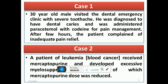Case number two talks about a patient with leukemia, that is blood cancer, receiving mercaptopurine, who developed excessive myelosuppression — that is bone marrow suppression producing far fewer WBCs and RBCs. Because of this, the mercaptopurine dose had to be reduced and the response achieved was only partial. Why this happens is what we need to examine in the lecture.